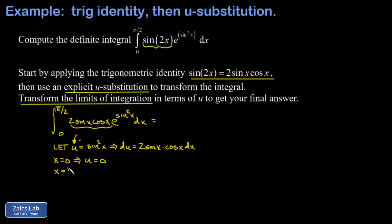And then I look at the upper limit. That's pi over 2. And when I plug in x equals pi over 2, the sine of that is 1. And when I square that, it's still 1. So my upper limit is u equals 1.